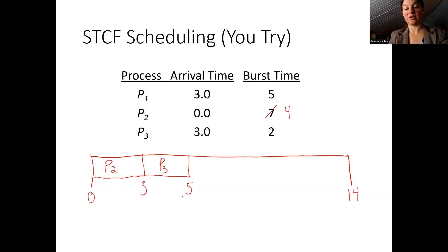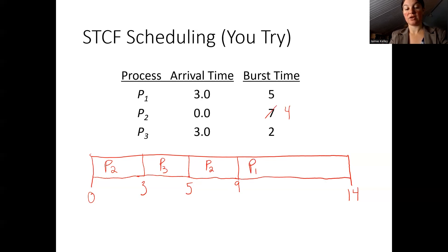At time five, process two takes back over because its remaining CPU burst of four is less than process one's remaining burst of five. Process two runs until time nine, then gives the CPU to process one, which runs until completion. Just like the last example, a preemptive decision was made at time three when new processes entered, but the other scheduling decisions were non-preemptive.